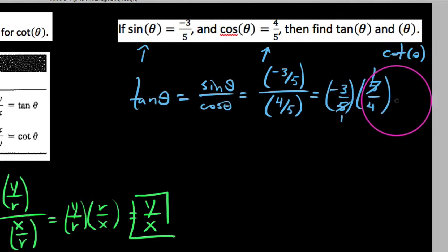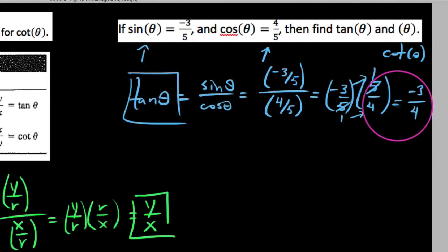So negative three-fifths times the reciprocal of four-fifths is five-fourths, and we end up with our fives canceling out. On top, we get negative three times one is negative three, and on bottom, we get one times four is four. What this means is that the tangent of this angle, which was the sine divided by the cosine, comes out to be negative three-fourths.